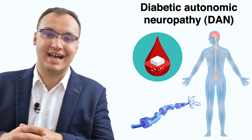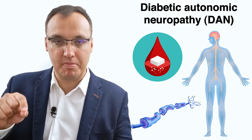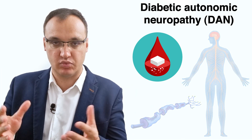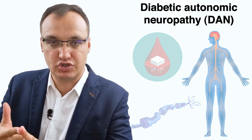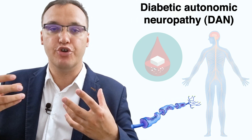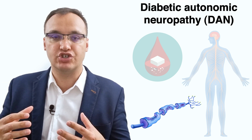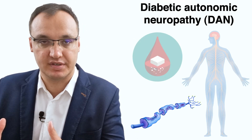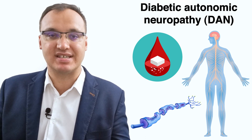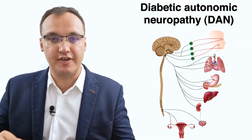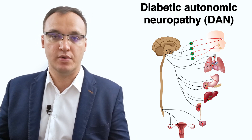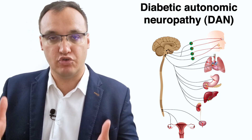Today we will discuss diabetic autonomic neuropathy. This word is composed of three things: diabetes, the autonomic system, and neuropathy, meaning nerve damage or nerve disease. We have a dysfunction of one or more nerves. Uncontrolled high blood sugar in diabetes damages nerves and interferes with their ability to send signals, leading to something we call diabetic autonomic neuropathy.